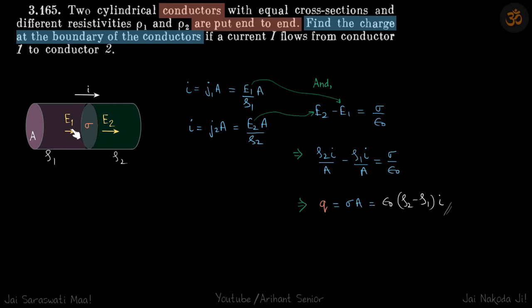So now we can say E2 minus E1, so we assume this charge is positive. This field is going to be larger than this one. So you can imagine that E2 minus E1 is sigma by epsilon.